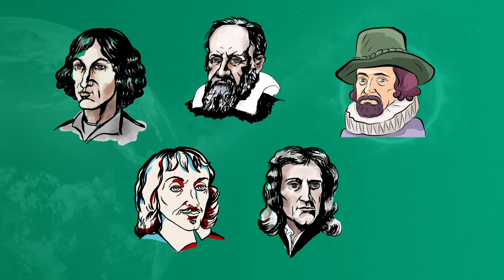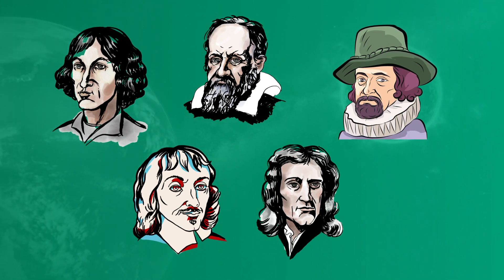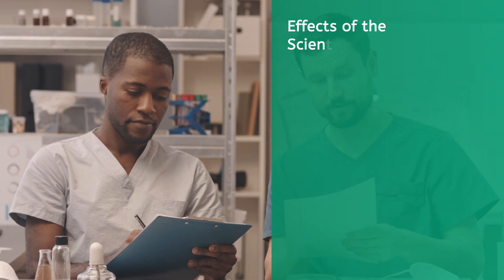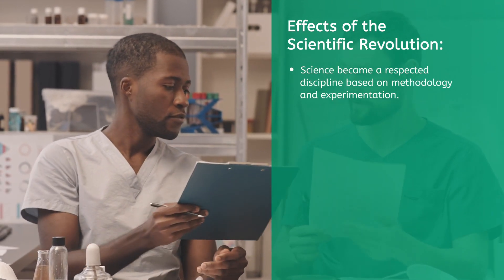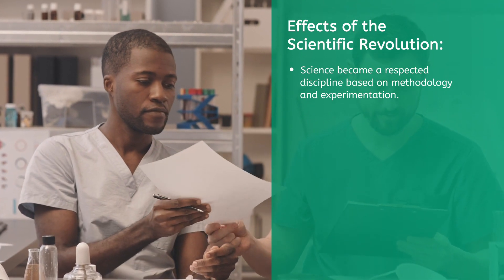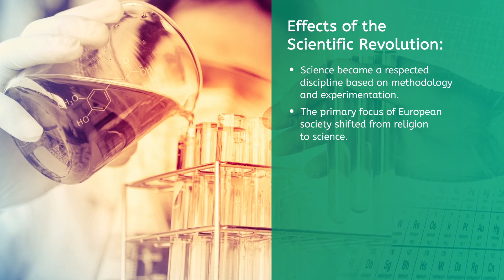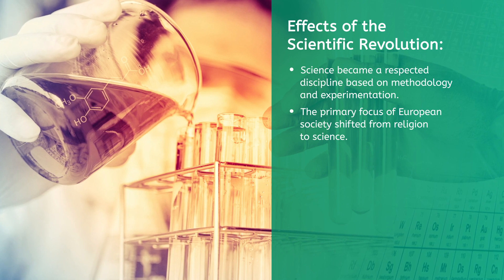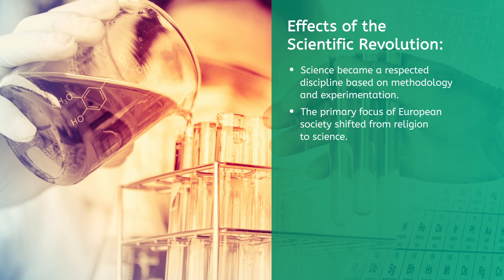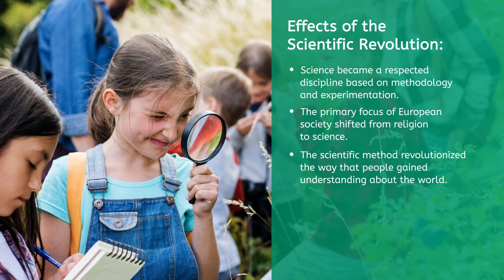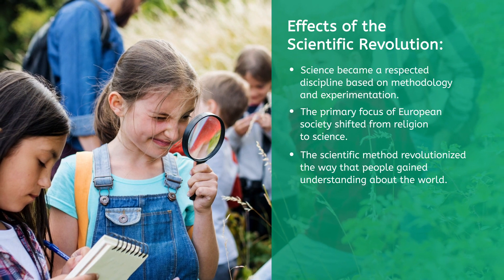So what did we learn from these intrepid explorers of the scientific world? We gained a new, revolutionary understanding of astronomy, physics, chemistry, and medicine. The Scientific Revolution transformed the notion of science from a collection of unsupported random observations about the world to a recognized and respected discipline based on methodology and constructive experimentation. It also sparked a shift in European focus from religion to science. The teachings of the church about the natural world were no longer simply accepted as fact, but were cross-checked using the scientific process. Science became part of our understanding of everyday life. The scientific method revolutionized the way that people gained understanding about the world — it created the framework for an agreed-upon, step-by-step process for reaching a conclusion.